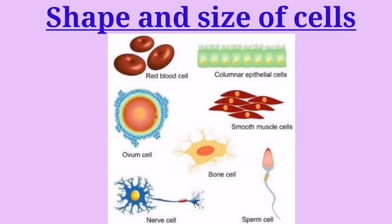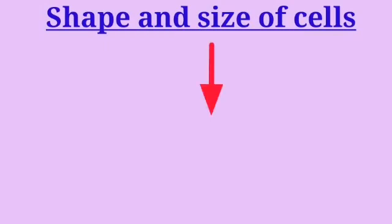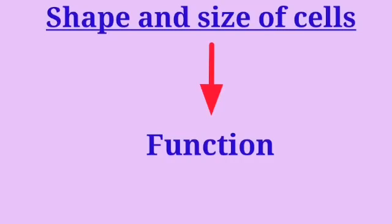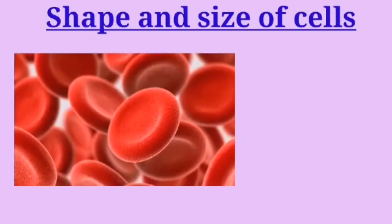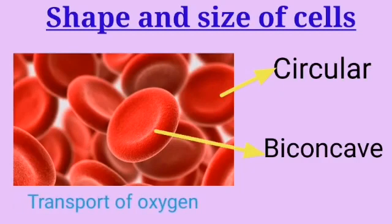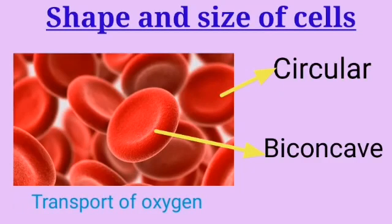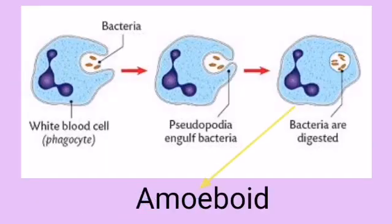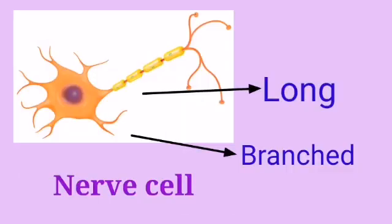Let's see diversity of cells with respect to shape and size. Shape and size of cells are related to the specific function they perform. Different shapes of cells are often related to the different function. For example, human red blood cells are circular and biconcave for the transport of oxygen. White blood cells are amoeboid that can squeeze out through capillary walls.